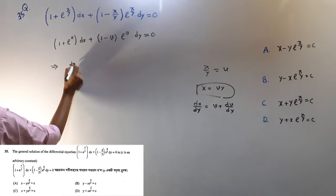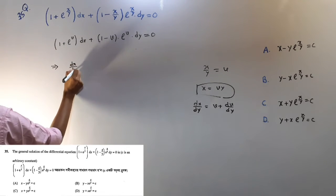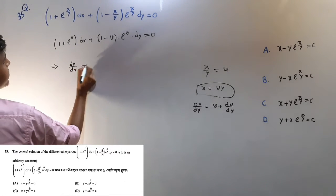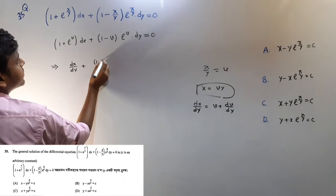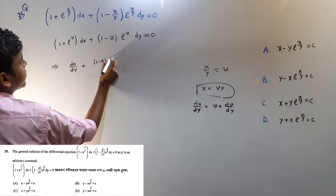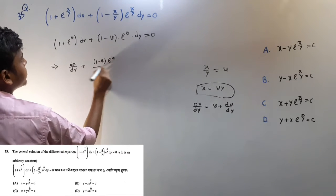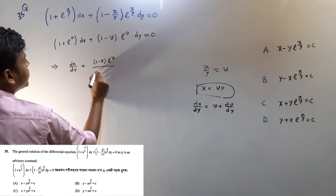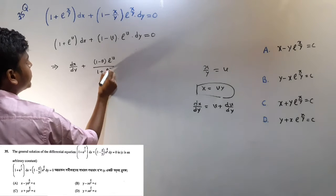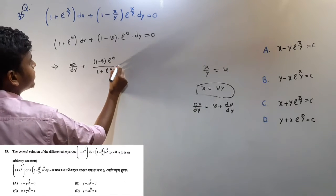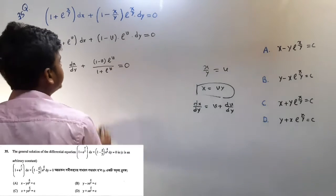dx/dy: 1 minus v·e to the power v, divided by 1 plus e to the power v, equals 0.